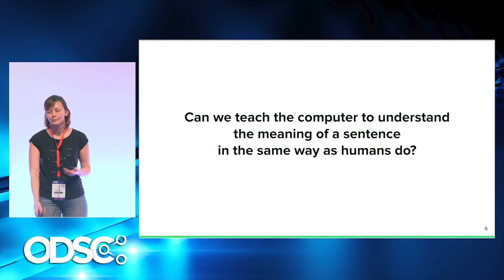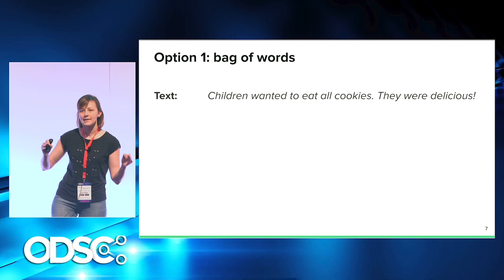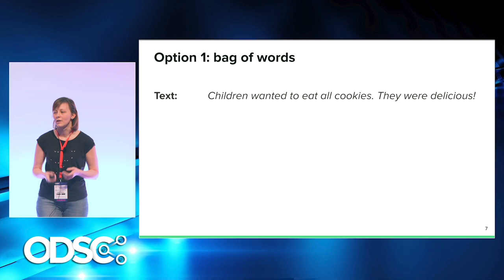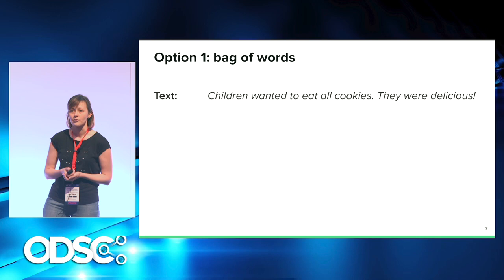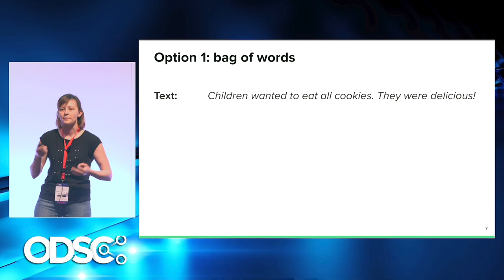Let's talk about some very simple, primitive ways to extract the meaning of text. Here we have a piece of text that says 'children wanted to eat all cookies, they were delicious.' The easiest way to represent the meaning is to find the most important words in this text. There are many simple approaches in natural language processing that help you normalize this text, lemmatize the words, and pick the most important words.